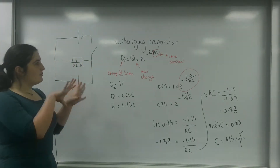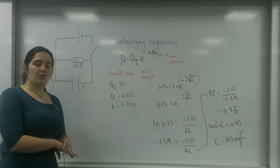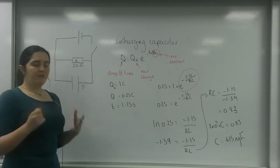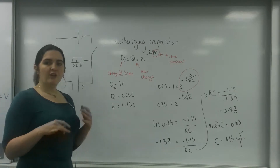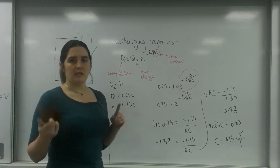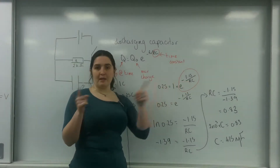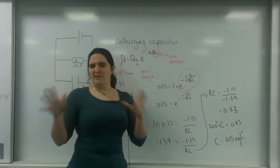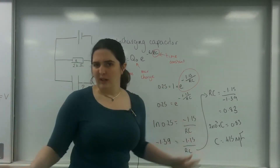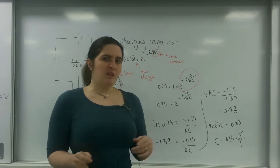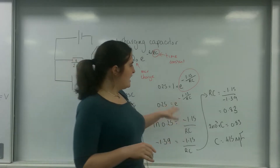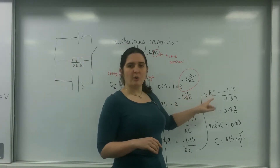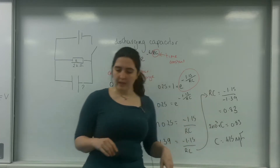What I've done here is used the discharging capacitor formula to find the time constant. One thing I do: if I knew both R and C, I would multiply them together to get a smaller number to work with. However, because I don't know C, I leave RC until the end and don't put any numbers in for it until then.